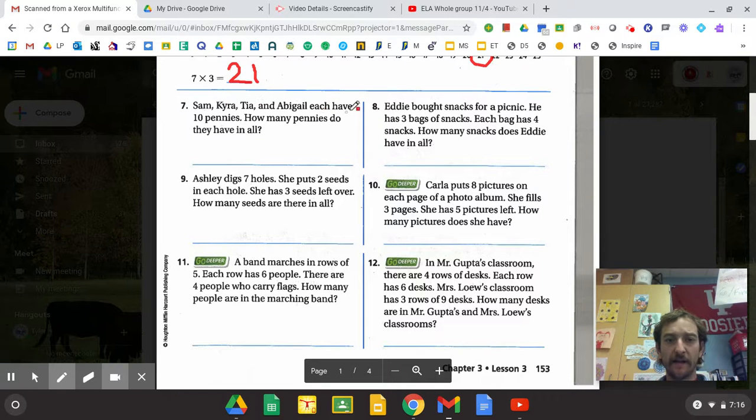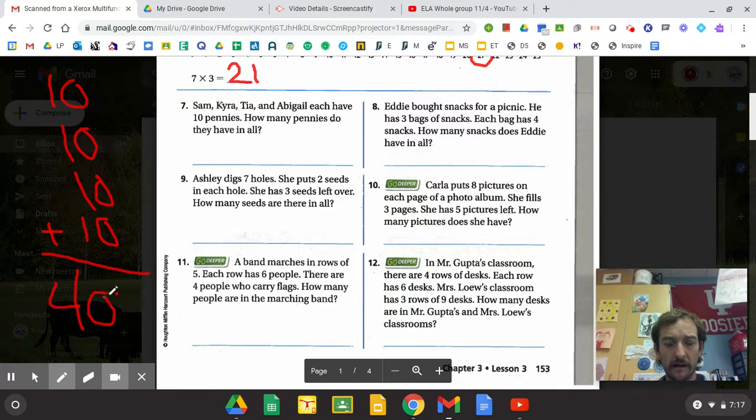Let's look at this one here. Sam, Kyra, Tia, and Abigail each have ten pennies. So that's one, two, three, four people. So that's ten, ten, ten, ten. Four groups of ten is the same thing as forty.